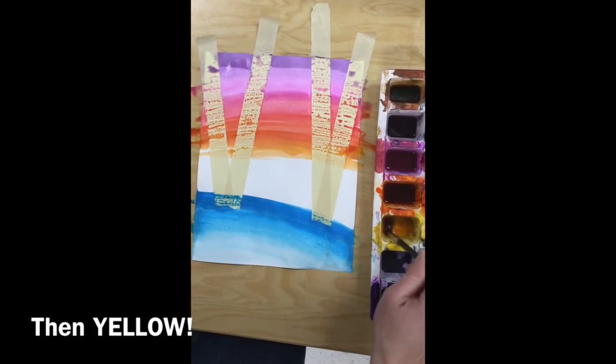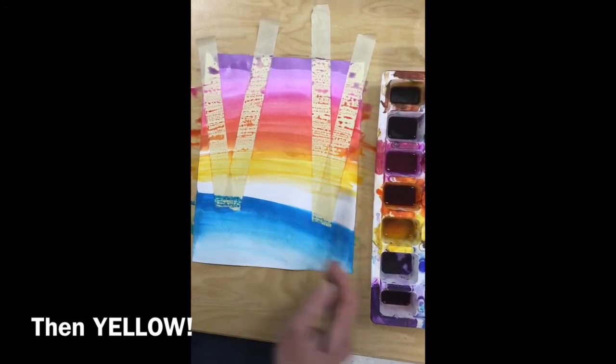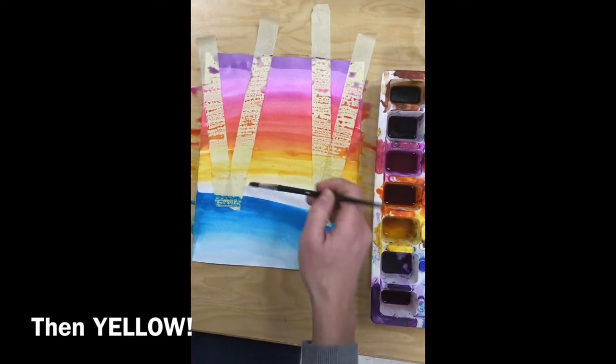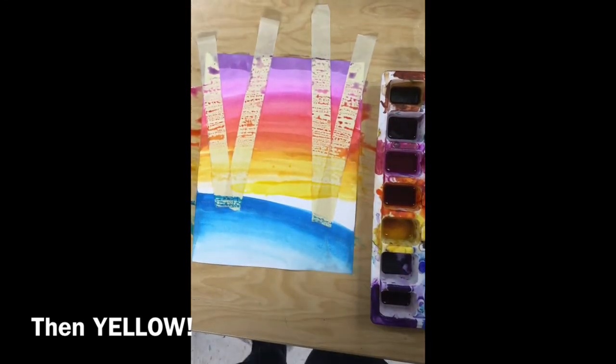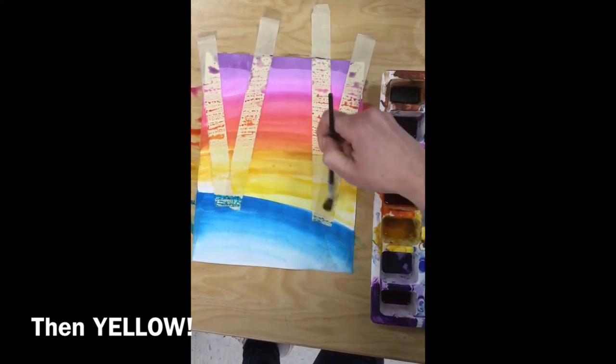Then I wash my brush before I grab the yellow. And again, I can use just water with the yellow to make it fade at the bottom. You're going to go all the way down until you touch the blue.